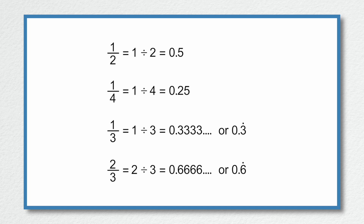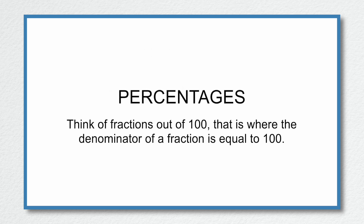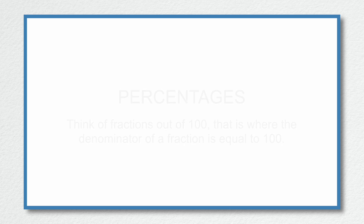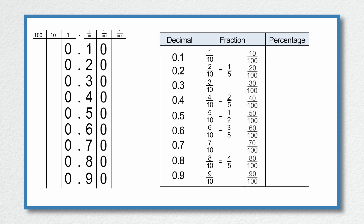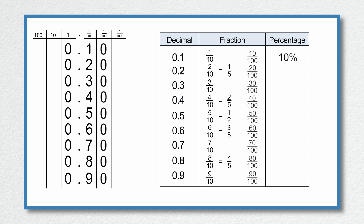So that's fractions and decimals. The only thing we need to look at now is percentages. Percentages are fractions out of 100 — that is, the denominator is 100. So wherever you see a fraction over 100, you can very easily write it as a percentage. Going back to our first set of decimals, 0.1 equals 1 over 10, but we also wrote it as a fraction out of 100 — that was 10 over 100. So as a percentage, 10 over 100 is 10%, the 10 referring to the numerator and the percent sign meaning out of 100.